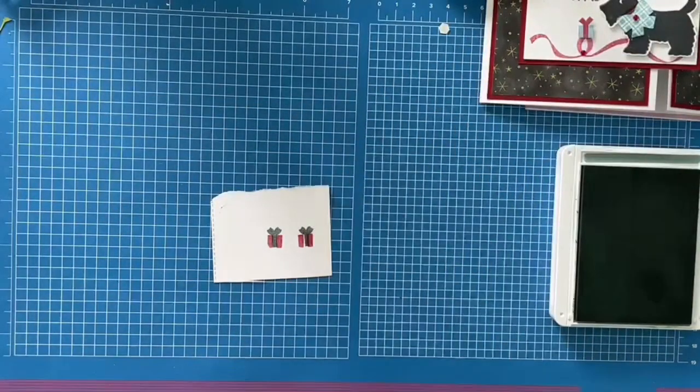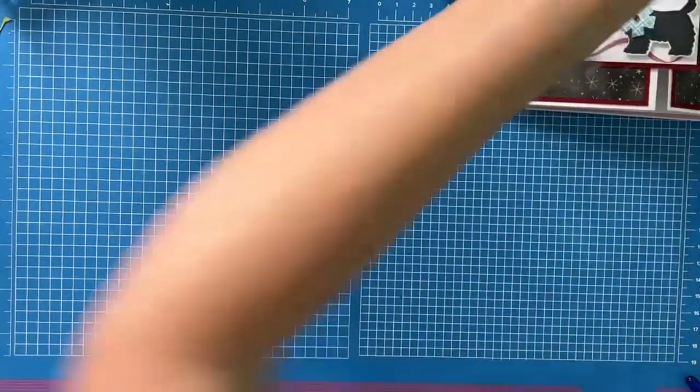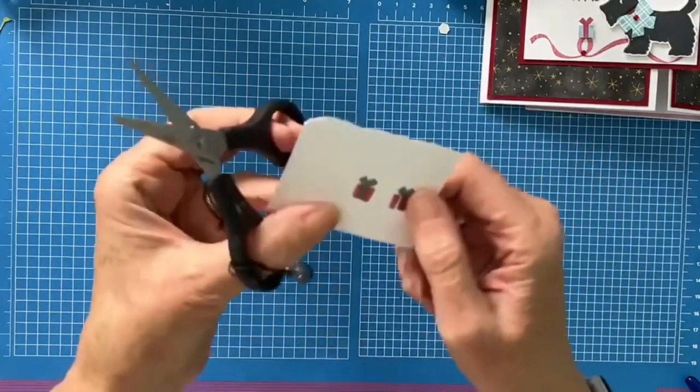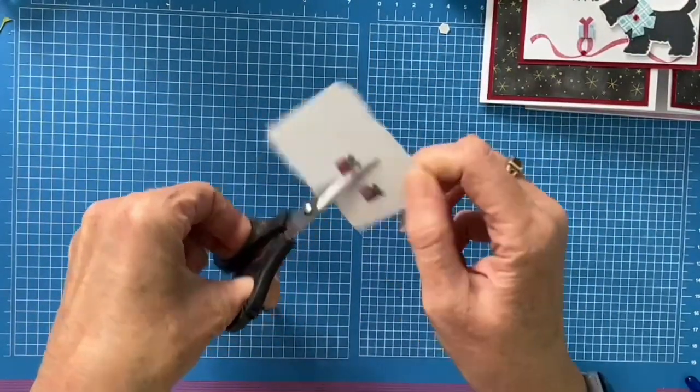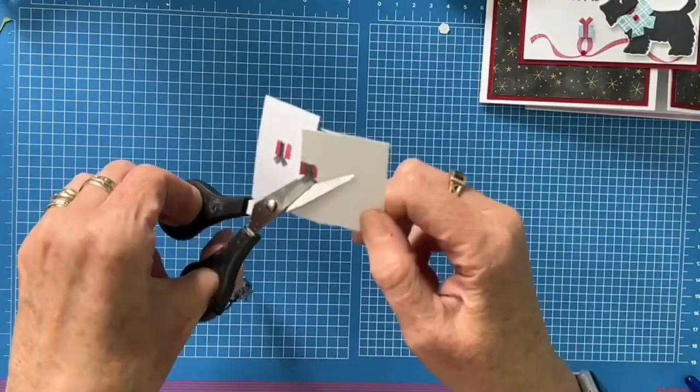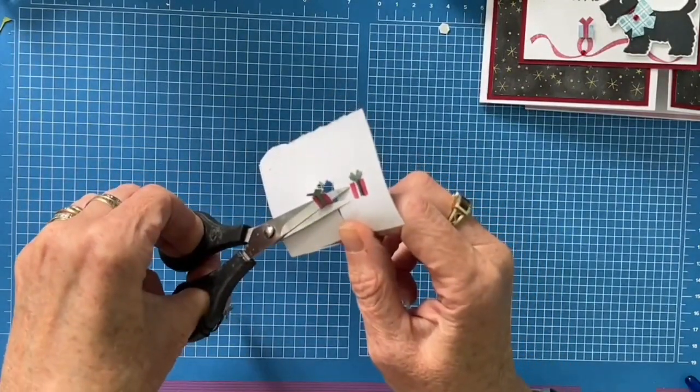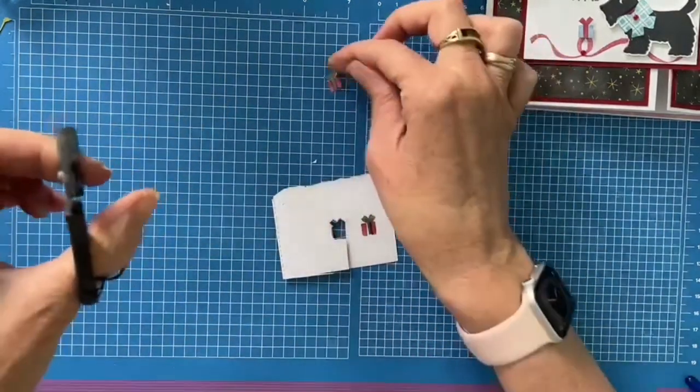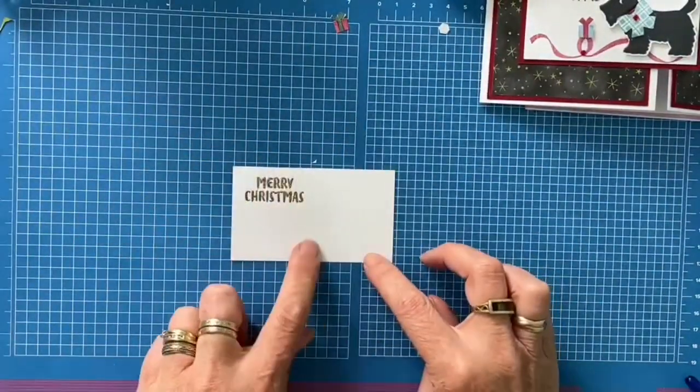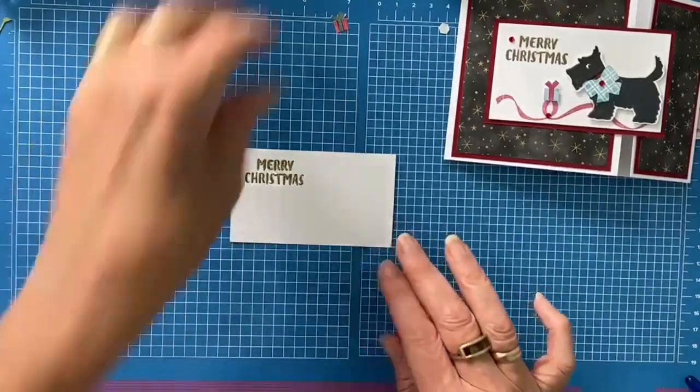So I am going to do the present first. Sorry, the bow first. And then I am going to go in with the present. And I hope that is going to work. That is better. So I am just going to close my ink pads. Then grabbing my paper snips. I am just going to quickly snip this out. So I am moving the card rather than my scissors. There you go. So there is the present snipped out.